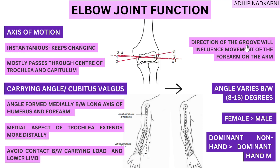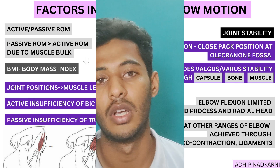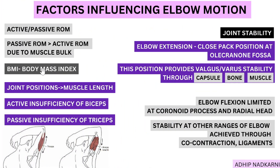Before looking at factors that influence elbow motion, we need to consider whether it is active or passive range of motion. Passive range of motion at the elbow is always greater than active range of motion due to muscle bulk — when actively flexing, the soft tissue limits movement, but relaxing allows a few extra degrees. Body mass index also plays a role: excess fat deposition around the elbow joint results in a different range of motion compared to someone with less soft tissue bulk.